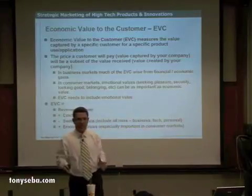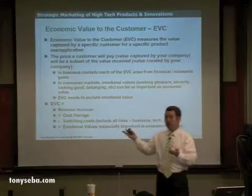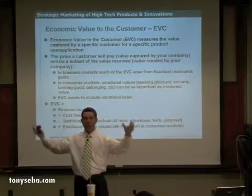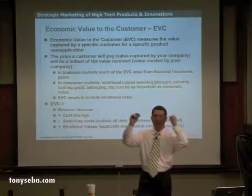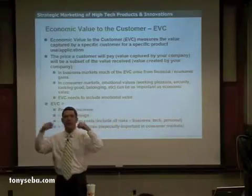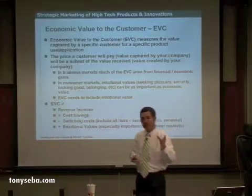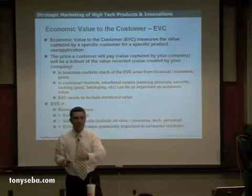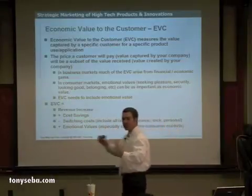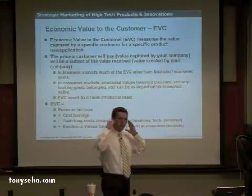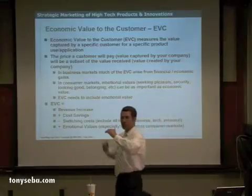Generally, EBC is equal to revenue increase plus cost savings. So if I save you $100,000, that is value I'm creating for you. If I'm adding $100,000 to your revenues, that's value I'm creating for you. Minus the switching costs, plus the emotional value. This is a short formula you can keep in your head: revenue, cost, switching cost, and emotional value.